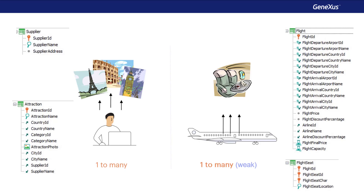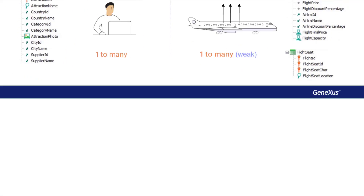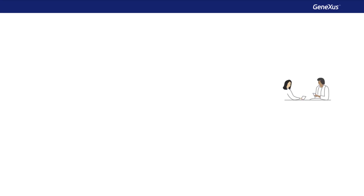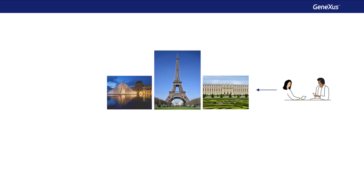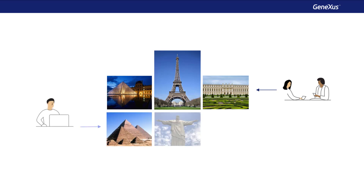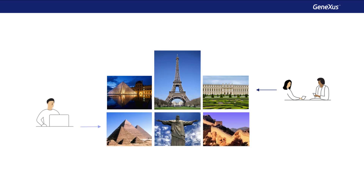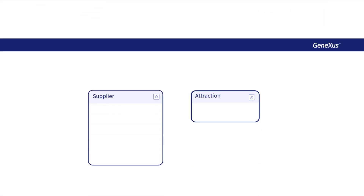We've seen one-to-many relationships, but they don't always fit the reality that we want to represent. For example, suppose that the travel agency tells us that their reality has changed: each supplier offers many tourist attractions as before, but each attraction can now be managed by several suppliers — not only one. The relationship between suppliers and attractions is no longer one-to-many, but many-to-many. How do we represent this in GeneXus?